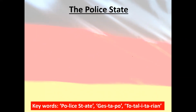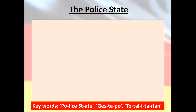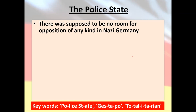So the police state — one of our keywords. If you're not familiar with this concept, definitely Google it, get it looked up, and write it down. Hitler spent a great deal of time, effort, and bloodshed achieving what he was trying to do — becoming the Führer. The last thing he wanted was anyone to come along and mess it all up. So what he wanted to do was make sure there was no opposition whatsoever — of any kind — from people in Nazi Germany.